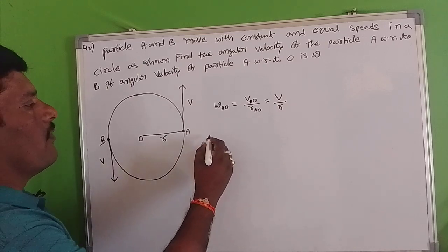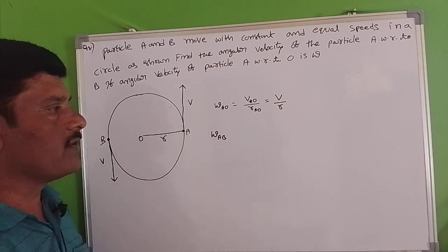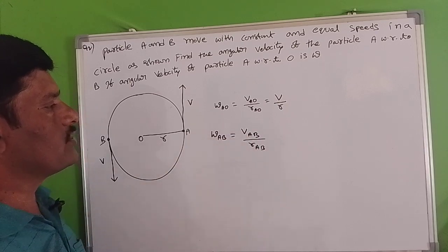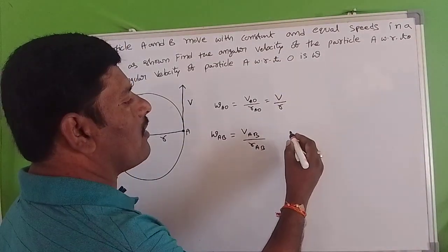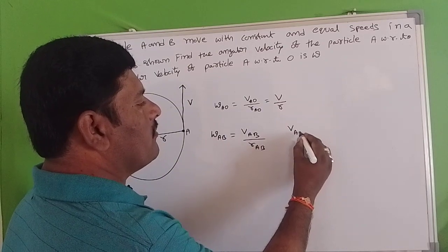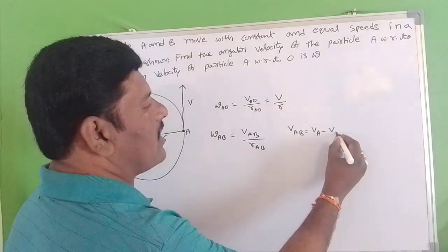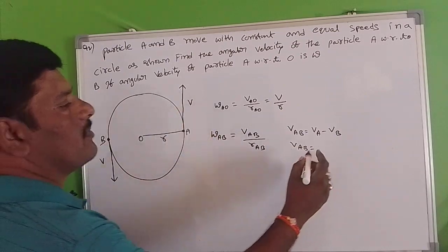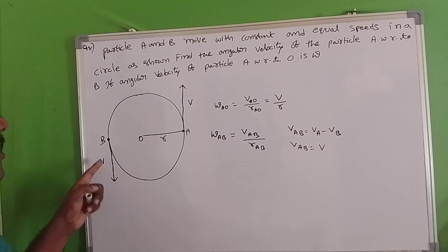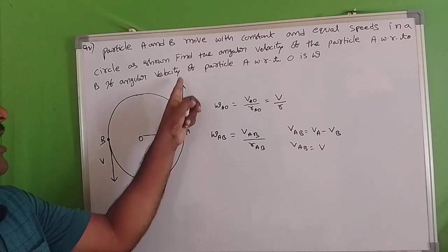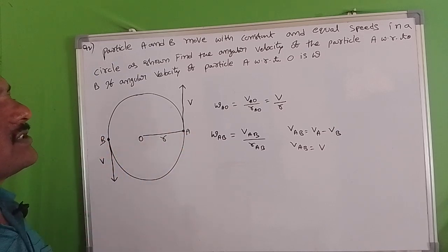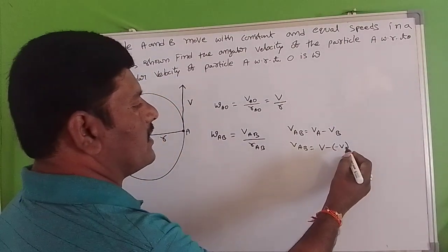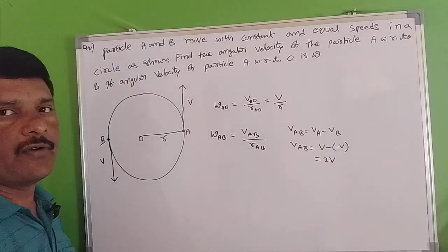Now we find the angular velocity of A with respect to B. We write: omega_AB equals V_AB by R_AB. We need to find V_AB. According to relative velocity theory, V_AB equals velocity of A minus velocity of B. The velocity of A is V upward. The velocity of B is also V but in the opposite direction, so minus V. Minus of minus gives plus, so V_AB equals V plus V equals 2V.